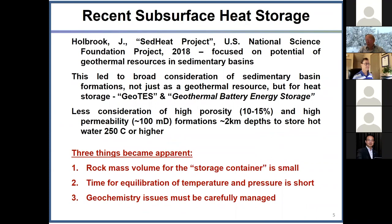Second, the high permeability causes pressure disturbances to quickly equilibrate, possibly nearly at the speed of sound of water. When injecting or producing water, flow creates a pressure variation in the reservoir; when injection or production stops, pressure quickly equilibrates back to the reservoir pressure. This rapid equilibration is also true for gravity water movement caused by thermal variations producing density changes. Thermal variations also equilibrate relatively quickly because the pore surface area contact between the water and rock is huge and uniformly distributed through the porosity, allowing thermal equilibrium between the rock and water to occur relatively quickly.